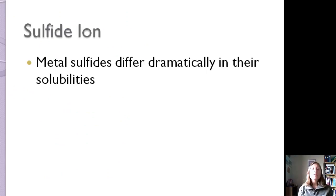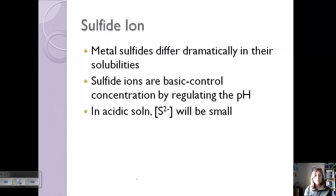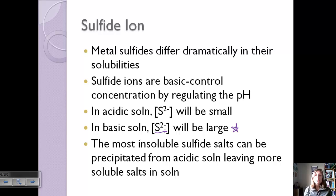Sulfides are used a lot in selective precipitation because metal sulfides differ dramatically in solubility. Since sulfide ions are basic, we can control their concentration by regulating pH. In an acidic solution, the sulfide ion concentration is very small. In a basic solution, the sulfide ion concentration is very large. The most insoluble sulfide salts can be precipitated from an acidic solution, leaving more soluble salts in solution. So to precipitate a very insoluble sulfide, make the solution acidic.